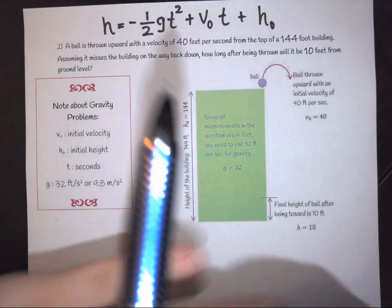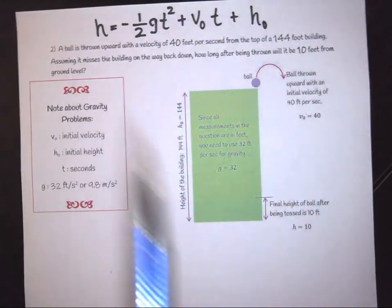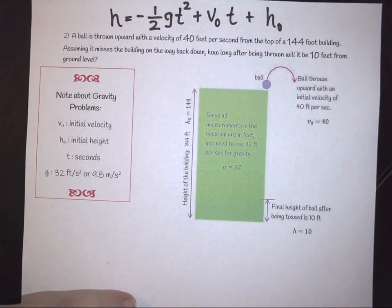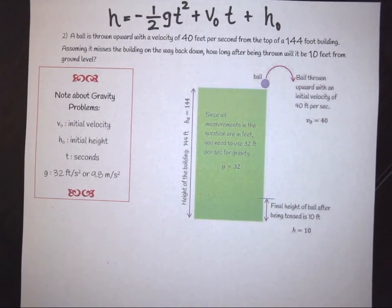So we need to look at what we have. And it says that a ball is thrown upwards with a velocity of 40 feet per second from the top of a 144-foot building. Assuming it misses the building on the way back down, how long after being thrown will it be 10 feet from ground level?